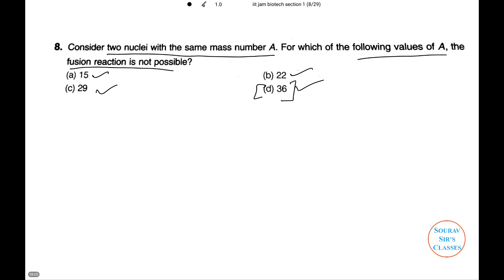For the nuclei having this mass number 36, reaction is not possible because fusion reaction occurs in lighter nuclei. Among all other options, nuclei with mass number 36 is comparatively heavier. Thus, fusion reaction will not take place. Thus, we will need to select number D.